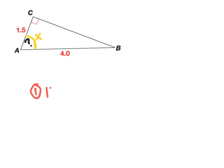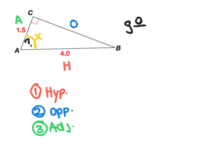I'm still going to first label my sides. I have the hypotenuse which is 4.0, the opposite which is across from our reference angle, and the adjacent which is 1.5. Using SOHCAHTOA, since I don't have an opposite, I'm left with adjacent and hypotenuse meaning that we're going to have to use cosine.